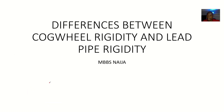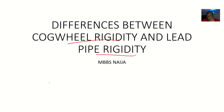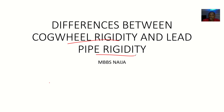There are two types of rigidity which are seen in Parkinson's disease and some other neurological diseases, and these are known as cogwheel rigidity and lead pipe rigidity. Some people confuse the two terminologies, so we are looking at the differences between cogwheel rigidity and lead pipe rigidity.